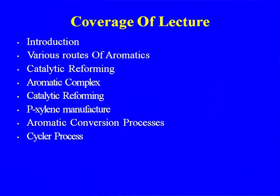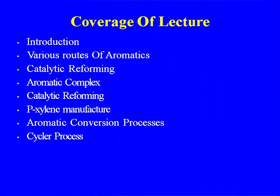First, the introduction about aromatics: the importance of aromatics, the various routes of aromatics, and catalytic reforming aromatics. Although the catalytic reforming part we have discussed in detail in the petroleum refinery, here the catalytic reforming is with more emphasis on aromatics production, not gasoline. Then the aromatic complex, para-xylene manufacture — which is a very important aromatic — and the large amount of para-xylene used in the manufacture of DMT or terephthalic acid. Then aromatic conversion processes and lastly the Cyclar process, where we make aromatics from propane and butane.